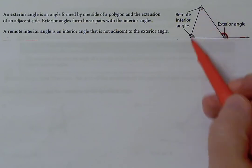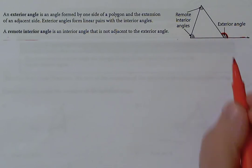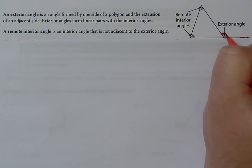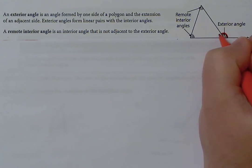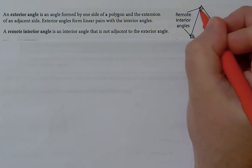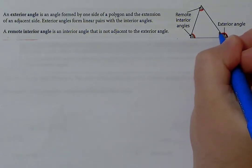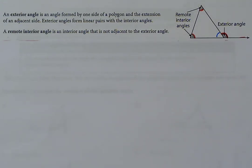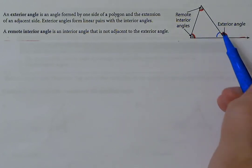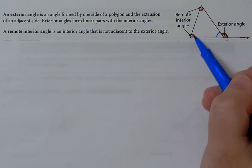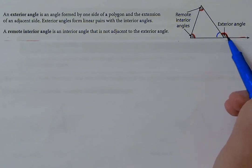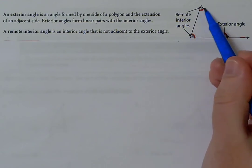A remote interior angle is an interior angle that is not adjacent to the exterior angle. The remote interior angles are the two angles that are not next to the exterior angle. This angle right next to the exterior is not a remote interior. So we have: interior, interior, interior — and the two that are not touching the exterior are the remote interior angles. Then we have the exterior angle itself.